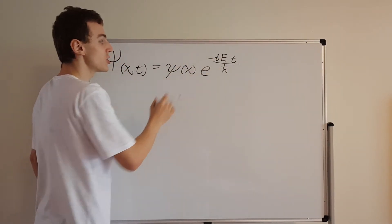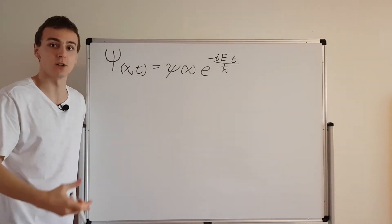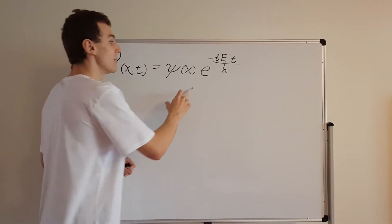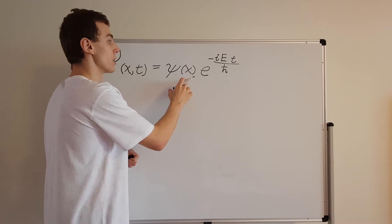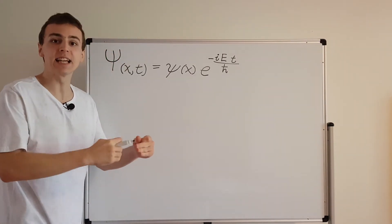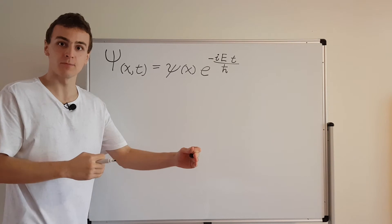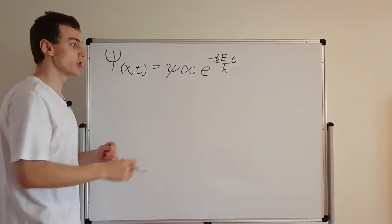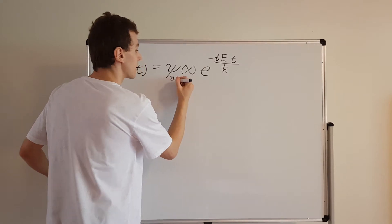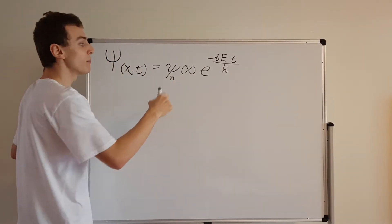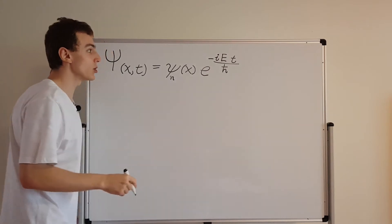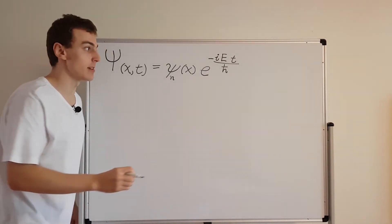When we solve the time-independent Schrödinger equation, we're not just going to get one solution — we're going to get an infinite set of solutions. We can label each of these solutions with an index n. So n is the little index that labels which solution we're dealing with.